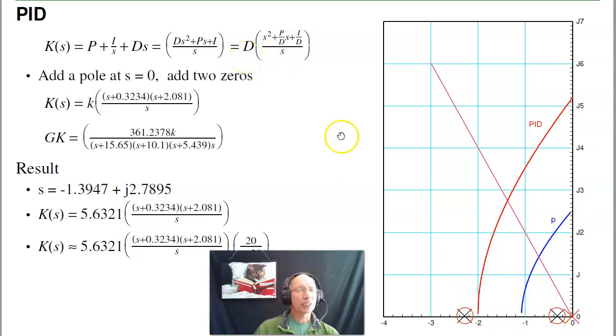So, I'll add a pole at S equals 0. Get rid of the pole at minus 0.32. Get rid of the next lowest pole. That specifies the numerator. That tells you P over D and I over D. Multiply this out. G times K is just your type 1 system plus the three remaining poles. Gives you the root locus in red. Find the spot on the root locus that intersects your damping line. That's minus 1.39 plus J 2.78. At that point, pick K so that G times K is minus 1. That gives you K is 5.6. So, here's your compensator.